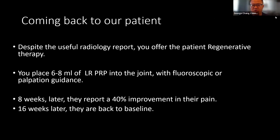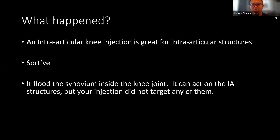Coming back to our patient: the radiology report says normal. You offer regenerative medicine therapy and place six to eight milliliters of leukocyte-rich PRP into the joint under fluoroscopic or palpation guidance. Eight weeks later the patient is 40% improved in pain; sixteen weeks later they're back to baseline. The question is: what happened? What most people do when treating a knee is a 'simple' intra-articular knee injection, which sort of works but doesn't really address the specific issues. When you inject into the joint, it floods the synovium and the joint cavity and can act on intra-articular structures, but you haven't actually targeted any of them in particular.